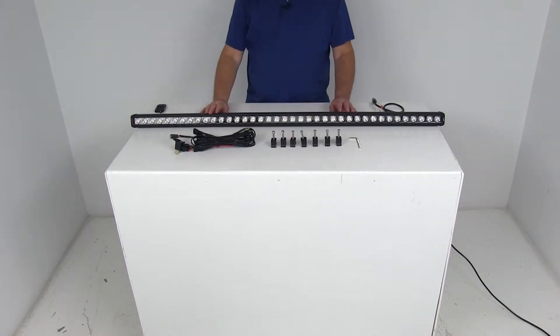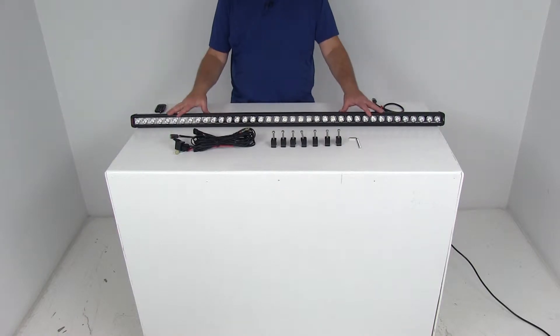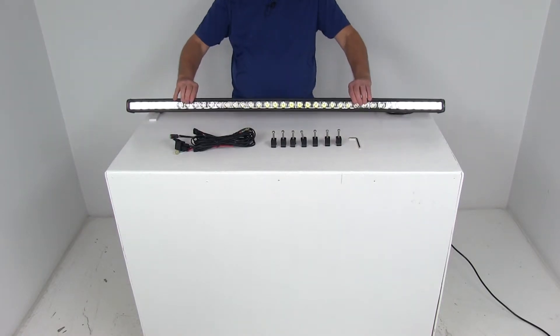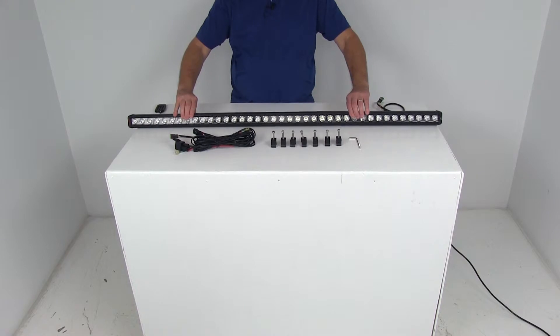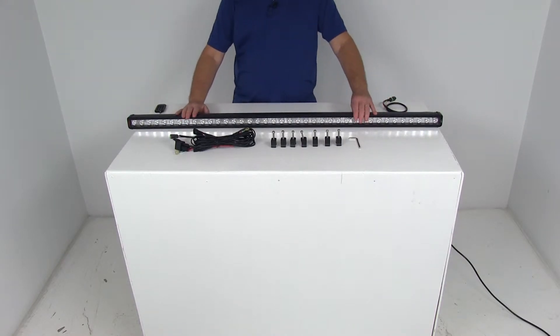Today we're going to review part number XIL-LPX3910. This is the Vision X X-Mitter 195 Watt LED Low Pro Prime Extreme Light Bar. It gives off a spot beam.